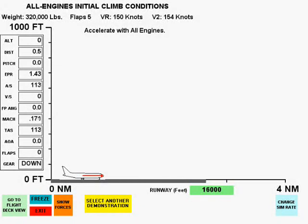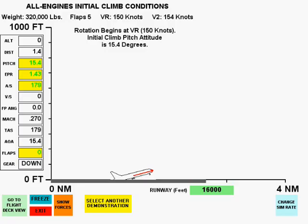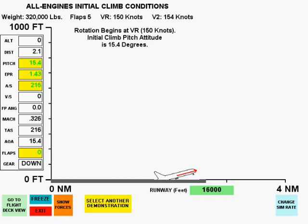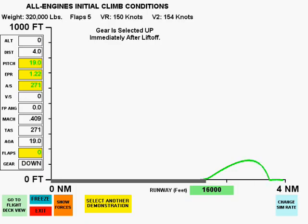With flaps still up, we will assume that flaps 5 has been set and will rotate to the initial climb attitude at the VR for flaps 5. Upon reaching climb attitude, we see that we have not left the ground and it is too late to stop. At the end of this 16,000 foot runway, the airplane finally leaves the ground and we add a few degrees of pitch to clear a building in front of us. Unfortunately, after gaining a little over 100 feet, our flight ends.